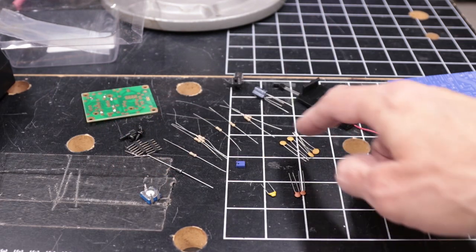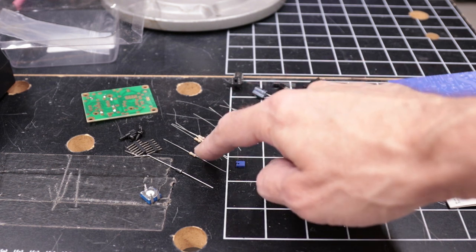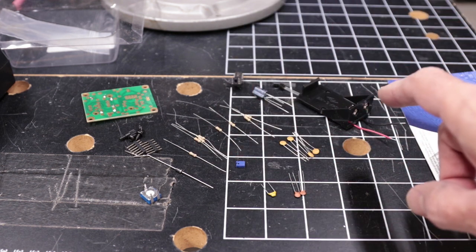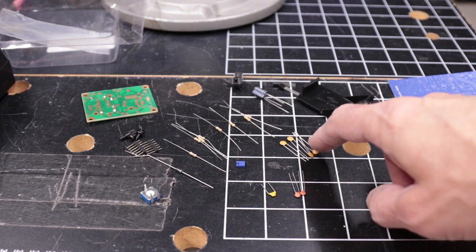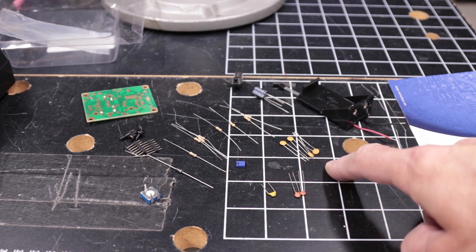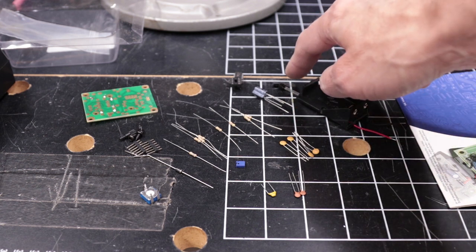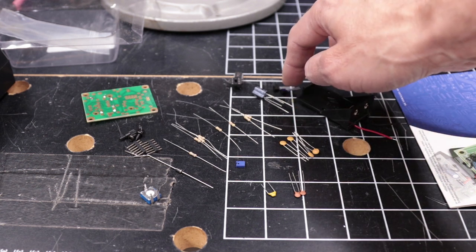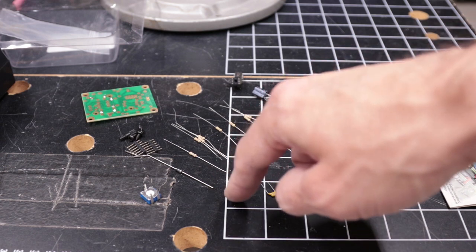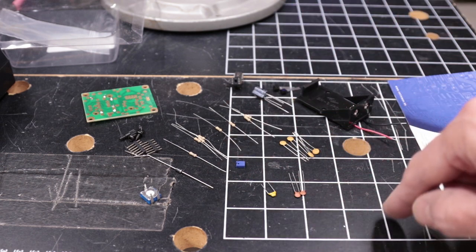So it looks like there are five values of resistors. Three different values of capacitors. One value of electrolytic capacitors. A single value for the transistors, and there's only a single diode, so there's only one of those values.